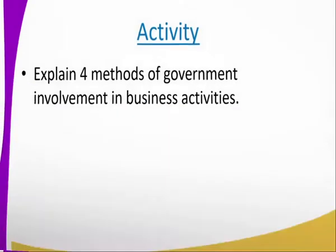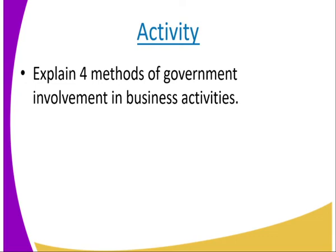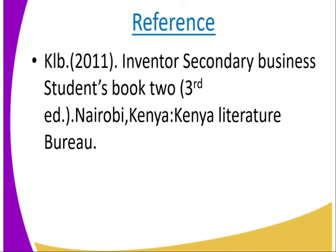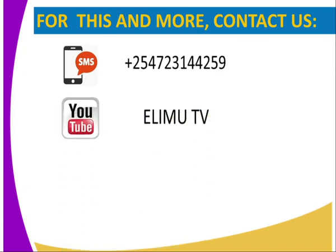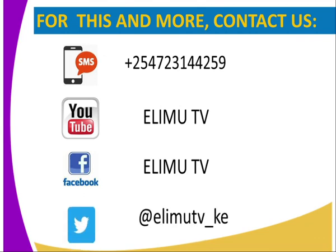Marking the end of this lesson, here is the activity: explain four methods of government's involvement in business activities. For reference, you can refer to KRB 2011 Innovator Secondary Business Student Book. You can contact us through SMS, YouTube, Facebook, or Twitter. Stay tuned to RIM TV, thank you.